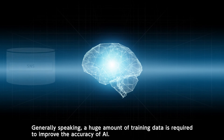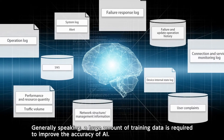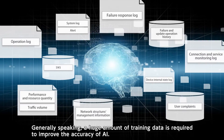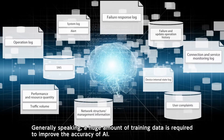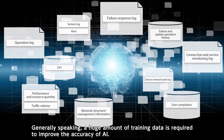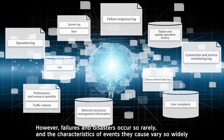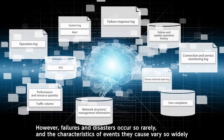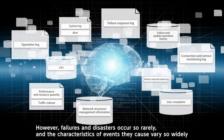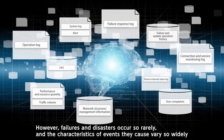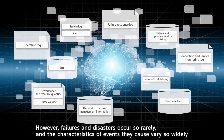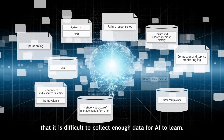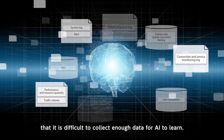Generally speaking, a huge amount of training data is required to improve the accuracy of AI. However, failures and disasters occur so rarely, and the characteristics of events they cause vary so widely, that it is difficult to collect enough data for AI to learn.